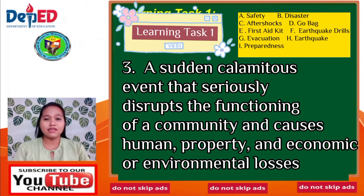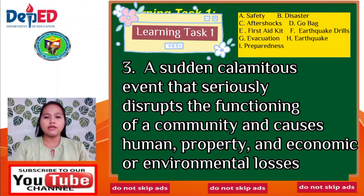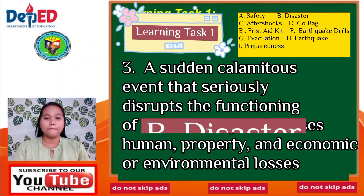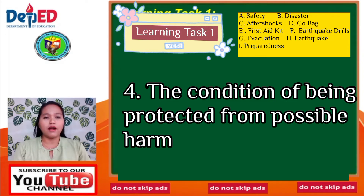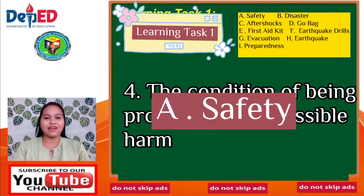Number 3: A sudden calamitous event that seriously disrupts the functioning of a community and causes human, property, and economic or environmental losses. The answer is Letter B — Disaster. Number 4: The condition of being protected from possible harm. The answer is Letter A — Safety.